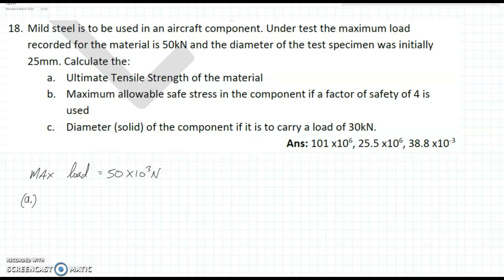So, the ultimate tensile strength, UTS, the formula for that is you get the max load and divide it by the original area. So, we have the max load, that's 50 kN. The original area, then, we're going to work out from the diameter.